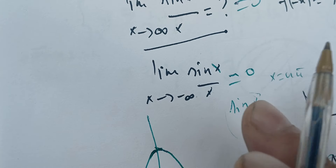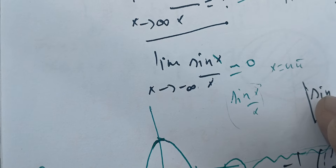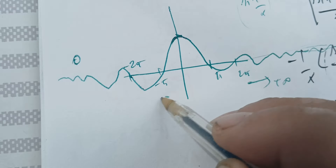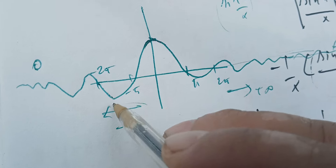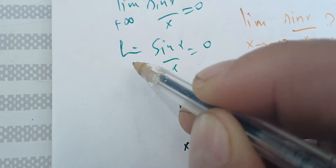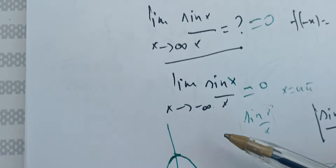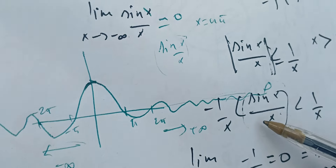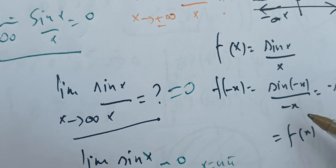So the key idea we can learn from here is that the limit as X goes to plus infinity is zero, and the limit as X goes to minus infinity is zero. The limit of sine of X over X is zero as we go to plus infinity, and zero as we go to minus infinity. This was shown both graphically and using the squeeze theorem.